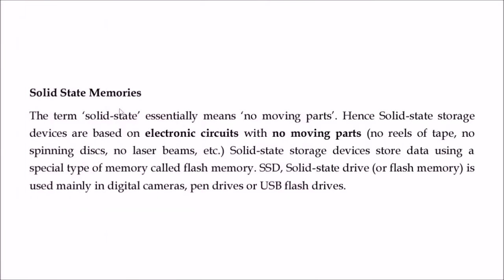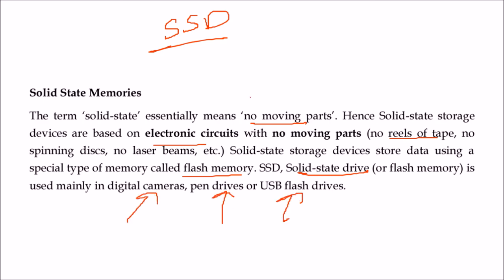Solid state drives (SSDs) have no moving parts — no spindle, no arm. Solid state storage devices are based on electronic circuits with no reels of tape, no spinning discs, and no laser beam. SSDs store data using a special type of memory called flash memory. Flash memory is used in digital cameras, pen drives, and USB flash drives.